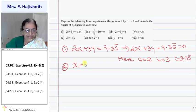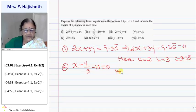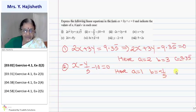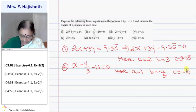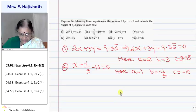Second question is x minus y over five minus ten equals zero. It is already in standard form. So here a is one, b is minus one-fifth and c is minus ten. It is already in general form.